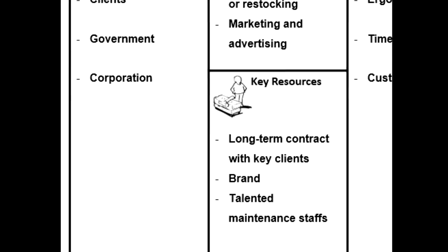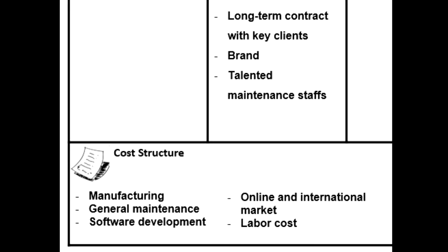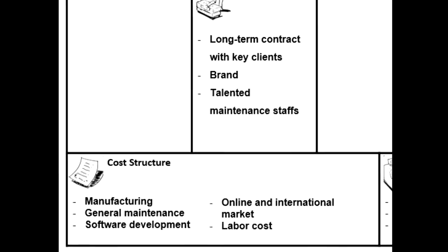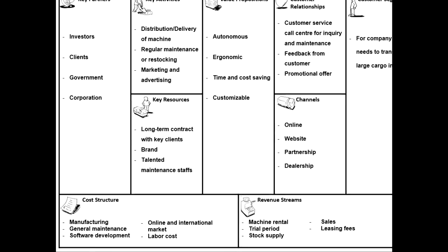The last block for the business model canvas is the cost structure, which covers the costs necessary to build the business model. In our case, the biggest costs are manufacturing the machine and doing its maintenance. Software development is also costly as it is the brain of the machine. Other costs include marketing and labor costs to deliver and build the machine. That is all for the business model canvas.